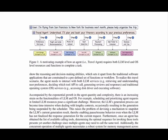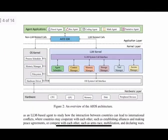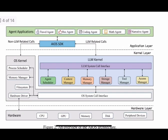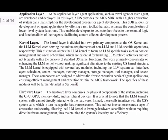The AIOS architecture consists of three layers. One: the application layer, where agent applications like travel, math, and recommendation agents operate. Two: the kernel layer, which is divided into two main components — the OS kernel, handling traditional OS functions like process scheduling, and the LLM kernel, managing LLM-specific functions like agent scheduling, context management, and tool handling. Three: the hardware layer, which includes the CPU, GPU, memory, disk, and other devices.